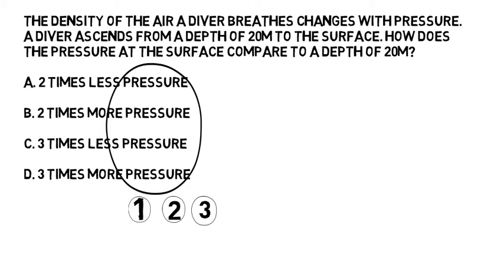Let's look at the question. And we see that it's quite a long-winded question. The density of the air a diver breathes changes with pressure. Yeah, I already knew that. That's probably not that important to me then. A diver ascends from a depth of 20 metres to the surface. How does the pressure at the surface compare to 20 metres? Still feeling a little bit confused by the words. Let's just focus on the final sentence.